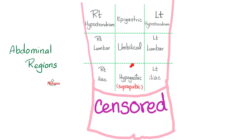How about this beautiful horizontal line? This is known as the intertubercular line or the intertubercular plane — because it goes from a tubercle to another tubercle.